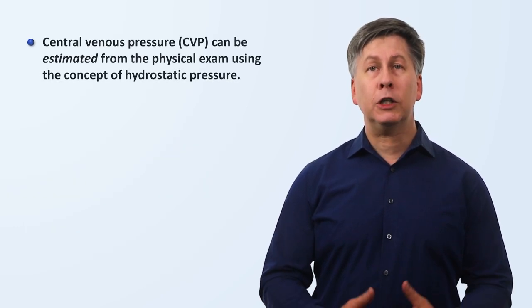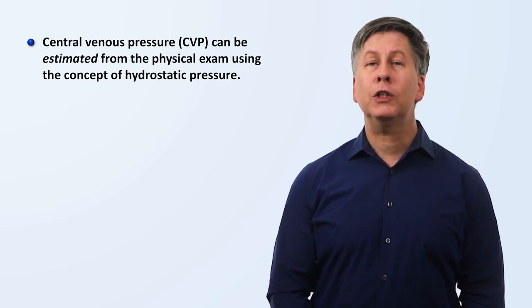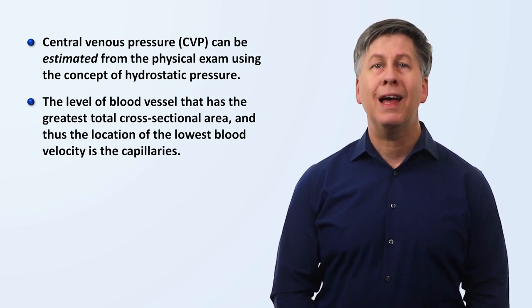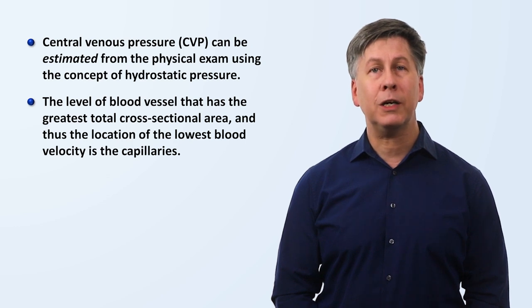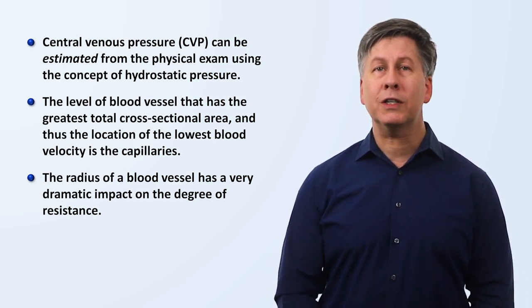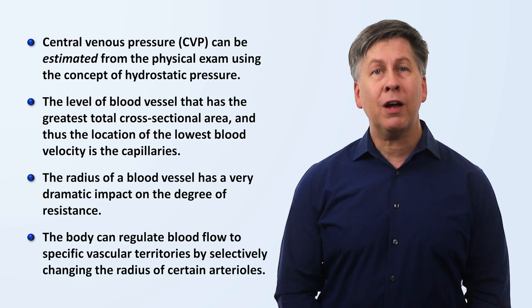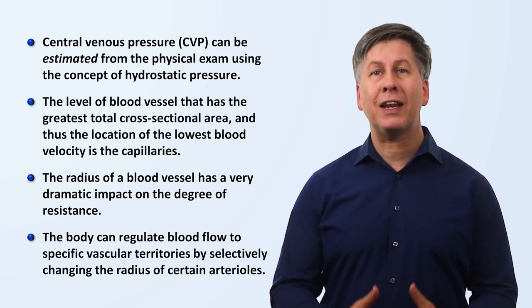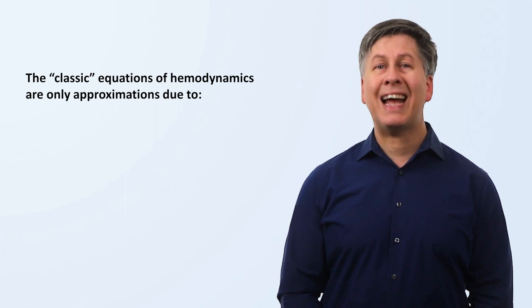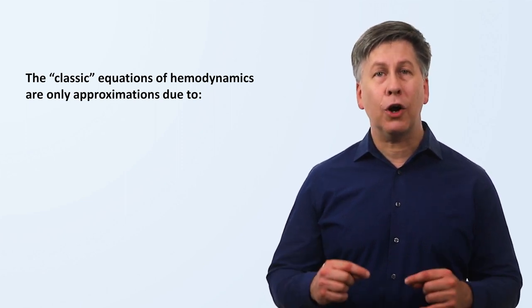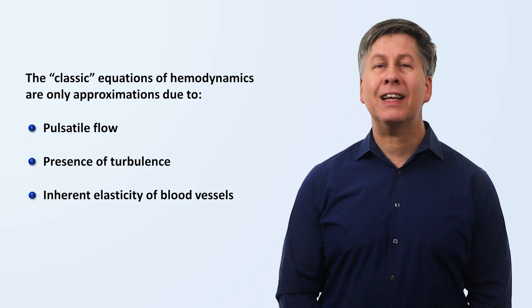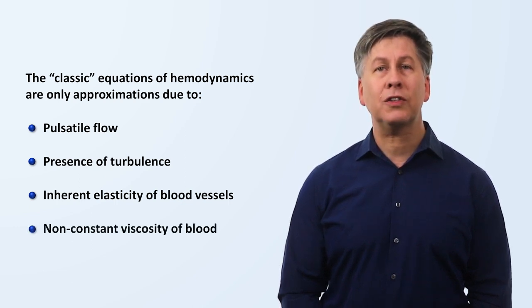Some other takeaway points. Central venous pressure can be estimated from the physical exam using the concept of hydrostatic pressure. The level of blood vessel that has the greatest total cross-sectional area and thus the location of the lowest blood velocity is the capillaries. The radius of a blood vessel has a very dramatic impact on the degree of resistance. The body can regulate blood flow to specific vascular territories by selectively changing the radius of certain arterioles. And last, the classic equations of hemodynamics presented in standard medical textbooks and in this video are only approximations due to pulsatile flow, the presence of turbulence, the inherent elasticity of blood vessels, and the non-constant viscosity of blood.